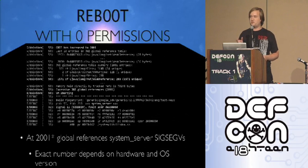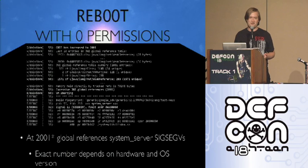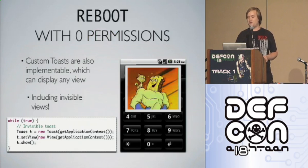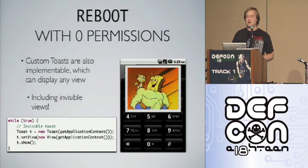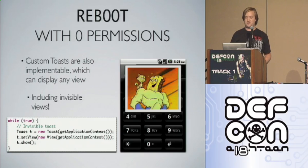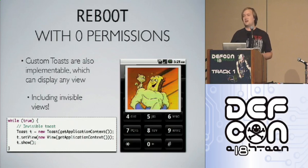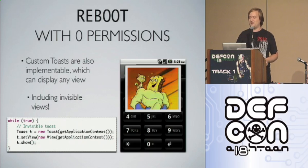You could display a countdown to when the phone is going to reboot, or use an invisible view — just create an invisible custom toast, pop it up, and after about 20 seconds the phone reboots. This requires zero permissions. Without any warning, an app can reboot your phone whenever it wants.